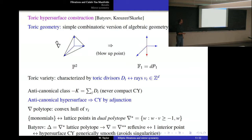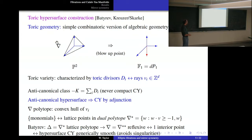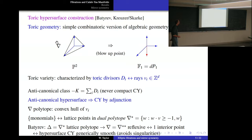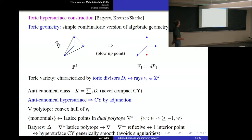The framework for Calabi-Yaus is conveniently discussed in the language of polytopes. We think of the polytope ∇ as the convex hull of the rays Dᵢ. The set of monomials in the anti-canonical hypersurface corresponds to lattice points in the dual polytope δ, defined by points whose inner product with all rays V is ≥ −1. Batyrev showed that if the dual polytope is a lattice polytope, then ∇ is reflexive, meaning ∇ = ∇**, equivalent to having a single interior point. When this holds, the hypersurface Calabi-Yau is generically smooth.